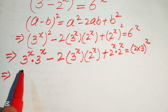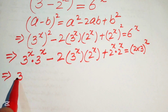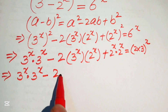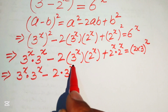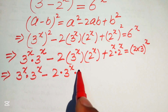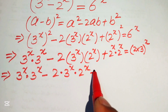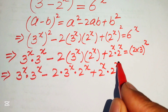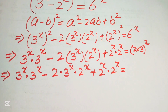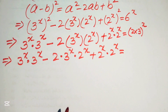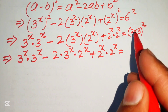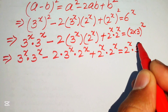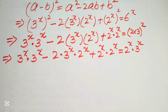So the equation becomes: 3^x · 3^x - 2·(3^x)·(2^x) + 2^x · 2^x = 2^x · 3^x.